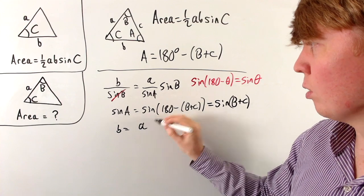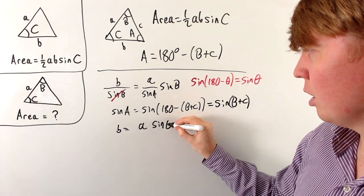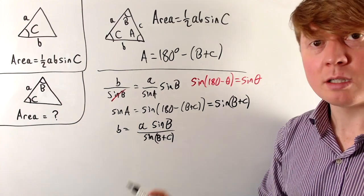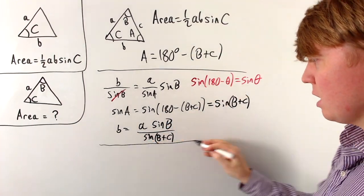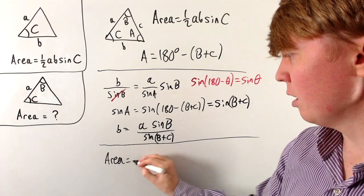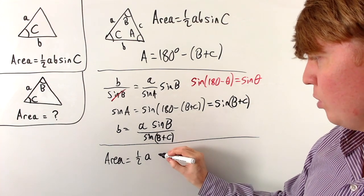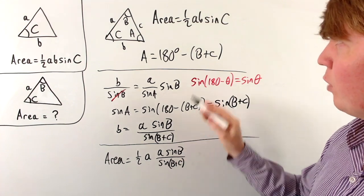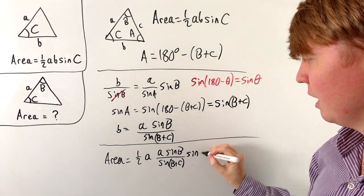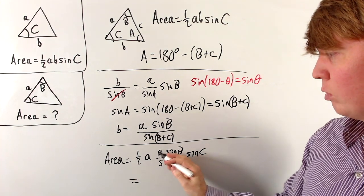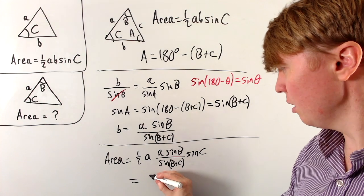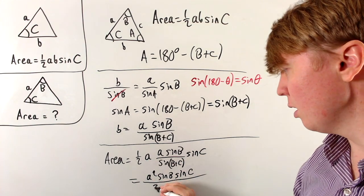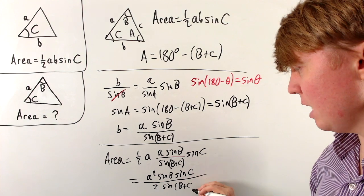So b equals a times sine B divided by sine(B plus C). Substituting everything into the formula a half AB sine C, we get: area equals a half times a times (a sine B over sine(B plus C)) times sine C. Expressing this as a single fraction, we get a squared sine B sine C in the numerator, and 2 times sine(B plus C) in the denominator.